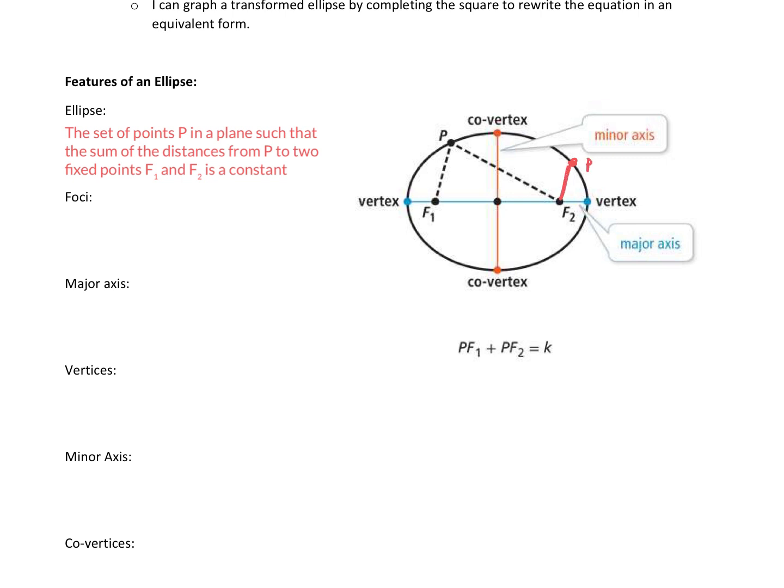The distance to F2 plus the distance to F1 is the same as this point P, the distance to those fixed points. That's what this down here is saying. The distance from P to F1 plus the distance from P to F2 is equal to a constant K.